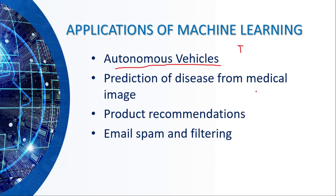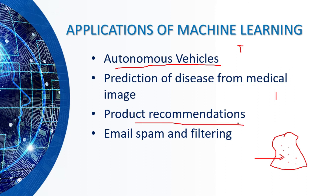The second application is predicting disease from medical images, which is a really interesting area. For example, if a patient has cancer, through the use of machine learning and image processing you can tell whether the patient has cancer or not. There is extensive use of machine learning in that field. The third application is product recommendations — when you shop a keyboard from Amazon, the next day you get a bunch of ads related to keyboards. There is a machine learning algorithm behind this that recommends products to customers.